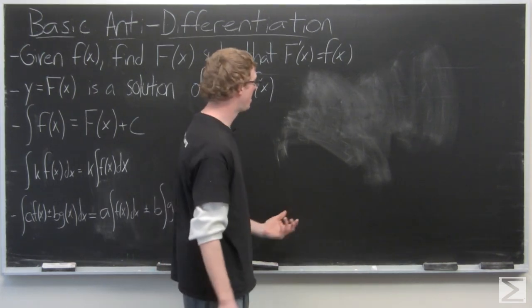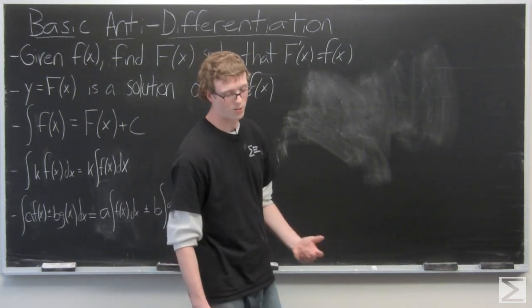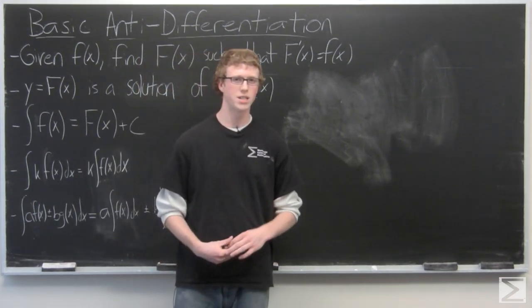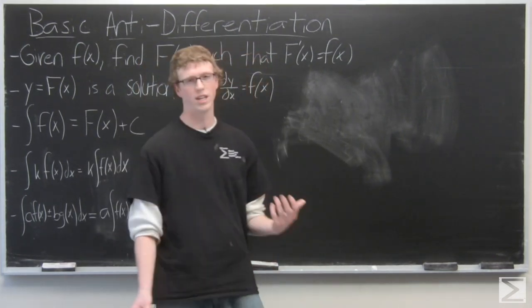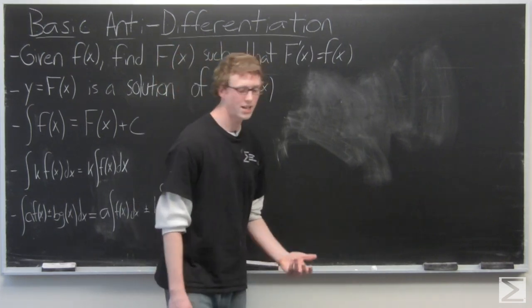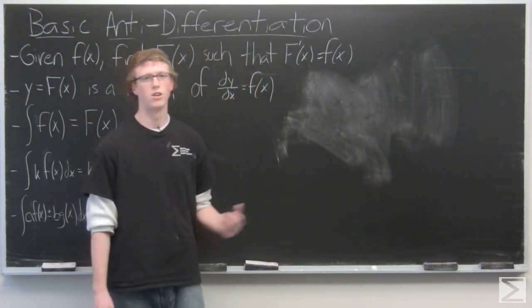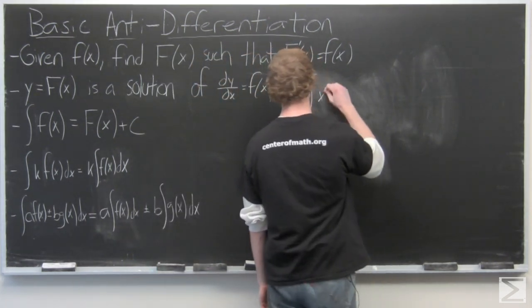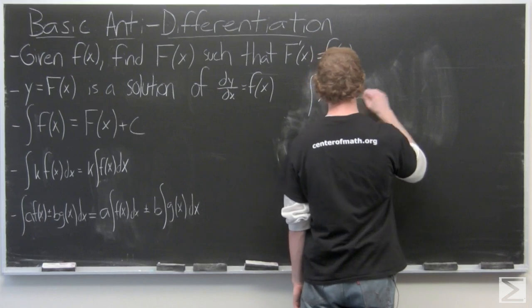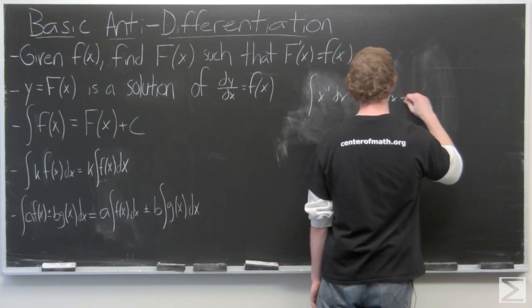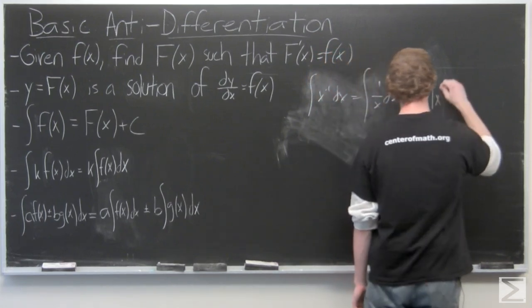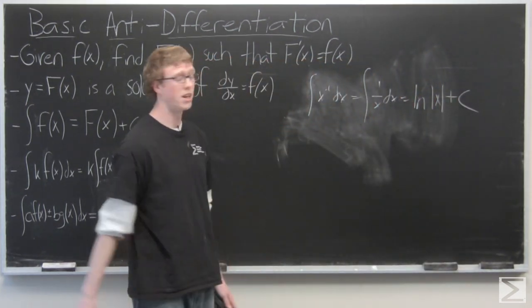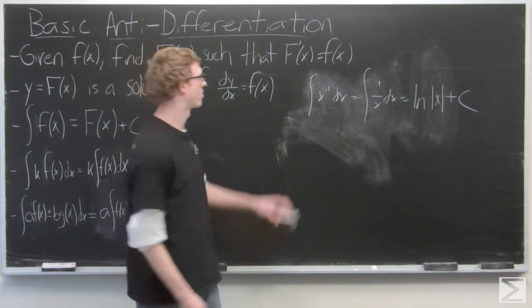That's the case for a general p, but when we have p equals negative 1, well we know that the derivative of natural log of x is actually 1/x. So the anti-derivative of x^(-1) or 1/x is going to be the natural log of the absolute value of x plus a constant. That's what the integral of 1/x or x^(-1) is.